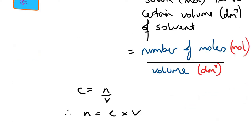Sometimes when we want to work out the number of moles of a substance and we know its concentration, we just multiply the concentration times the volume. It's important to get the units for volume right — we're not talking about centimeters cubed or milliliters here, we're talking about decimeters cubed, which is 1,000 centimeters cubed, which is the same as a liter, which is 1,000 milliliters.